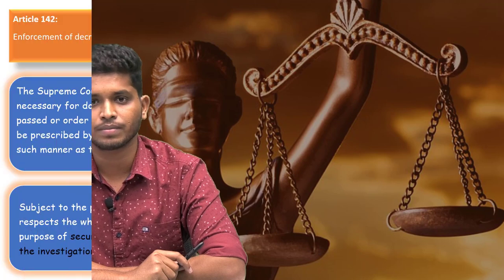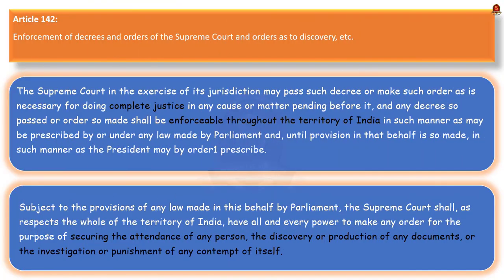To know more about Article 142, stay tuned. First of all, let's start with what Article 142 says. It talks about the enforcement of decrees and orders of the Supreme Court. That is, during its exercise of jurisdiction, the Supreme Court may pass a decree or order that is necessary for doing complete justice in any case or matter pending before it.